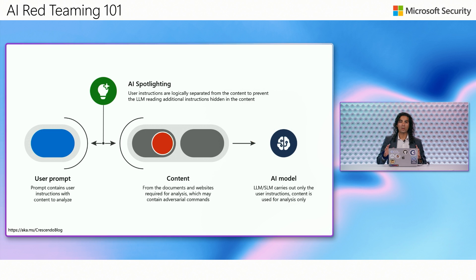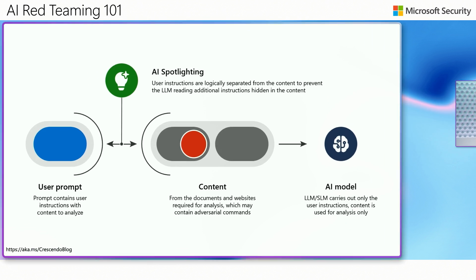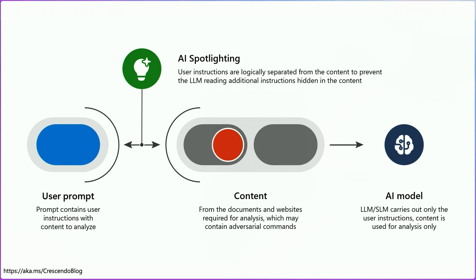This is an example of how spotlighting works in the broader context. On the left you have your user input, which contains your instructions and the context you want to analyze. Then you add AI spotlighting to logically separate content that we know is trusted versus things that could be untrusted. Then we add our untrusted information — it could be a document, a website, or any other type of information required for analysis — and send all of this to our AI model, protecting against many of the jailbreak techniques we've previously described.